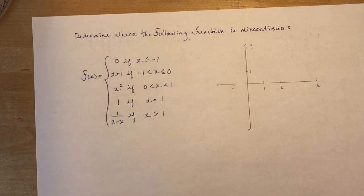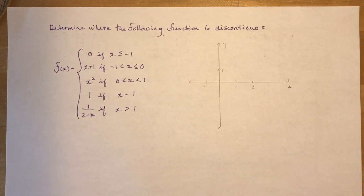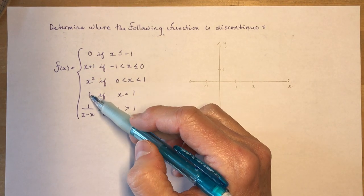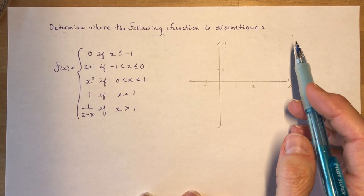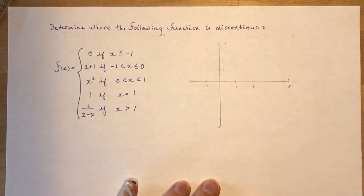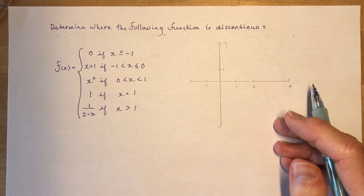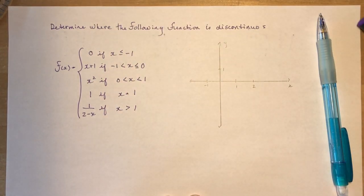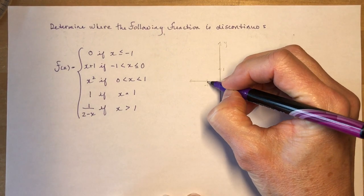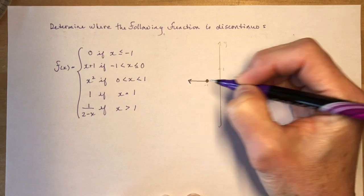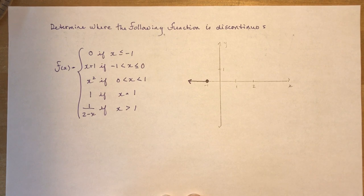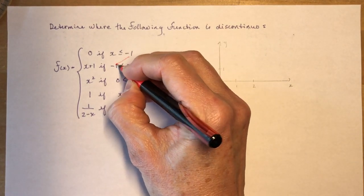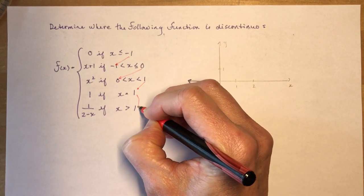Now for the longer example you'd get on a unit test — the teacher asks you to determine where a function is discontinuous. We have a piecewise function with 5 parts; it would be a good idea to draw it. The function is defined as: f(x) equals 0 if x is less than or equal to negative 1, and f(x) equals x plus 1 between negative 1 and 0. We want to check how the function joins as we move from piece to piece.